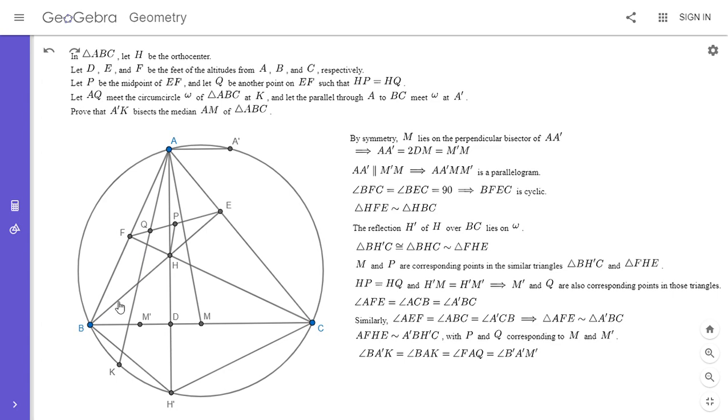And angle FAQ is equal to angle BA prime M prime. I'm sorry, this should just be BA prime M prime. And that's true because, like I mentioned, since these quadrilaterals as a whole are similar and Q corresponds to M prime, that means that angle FAQ corresponds to angle BA prime M prime. And so they have to be the same.